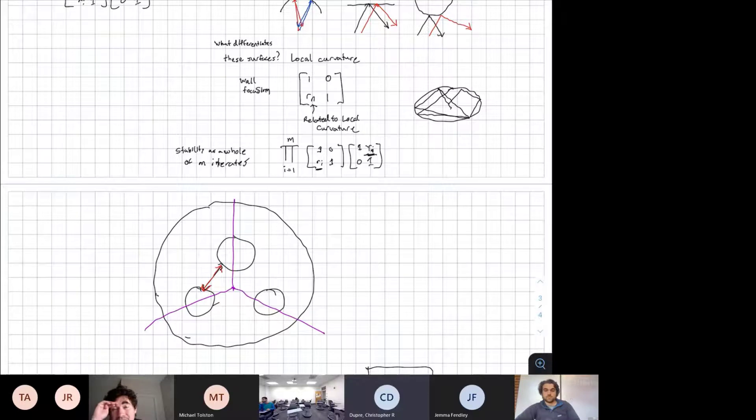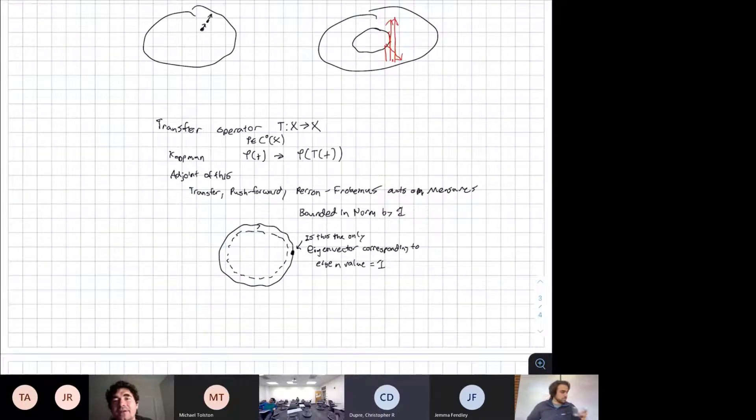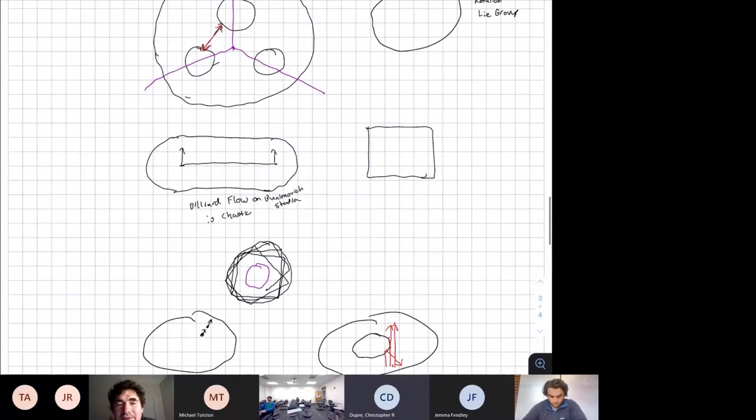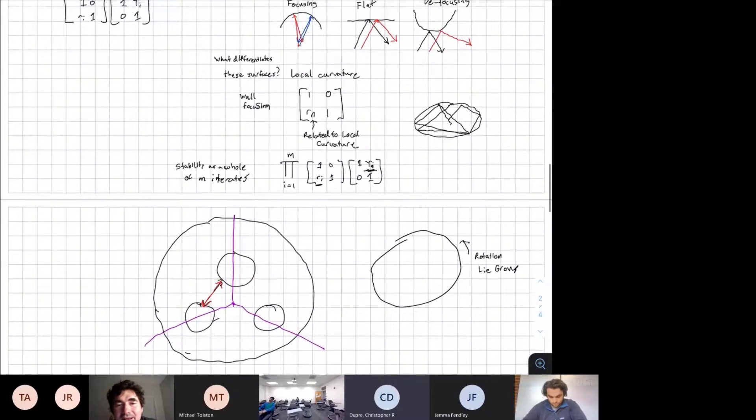If I know that the stability matrix always gives me unstable eigenvalues, expanding eigenvalues for any trajectory, is that enough to say that the system is going to be chaotic? That essentially reduces to a uniformly expanding map.